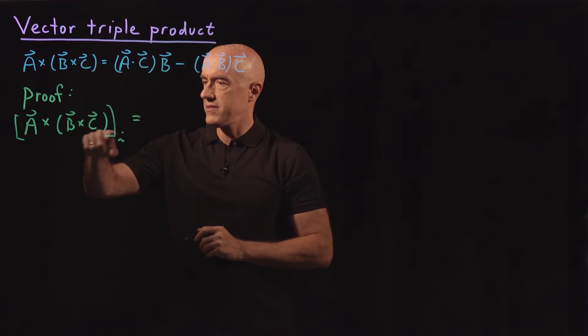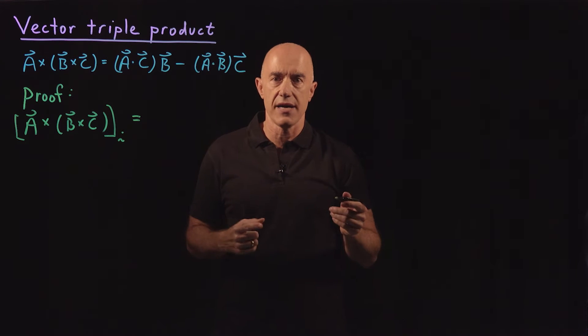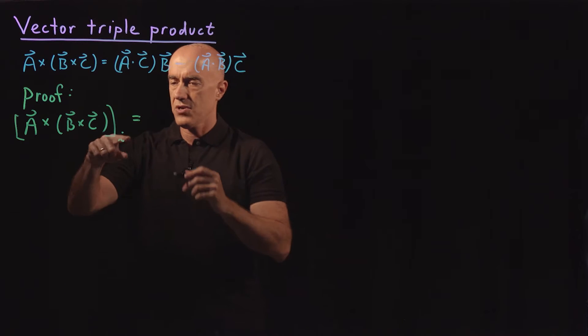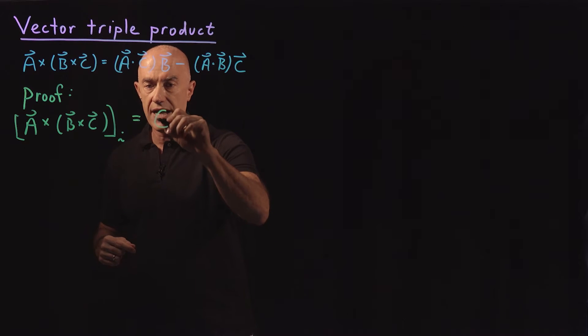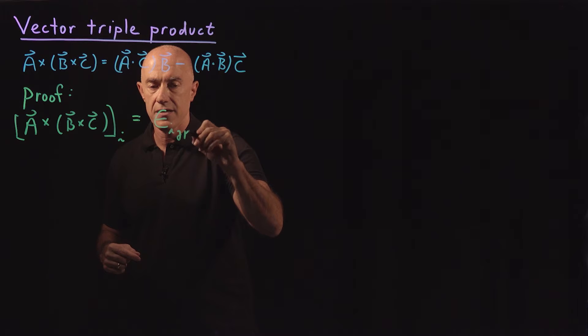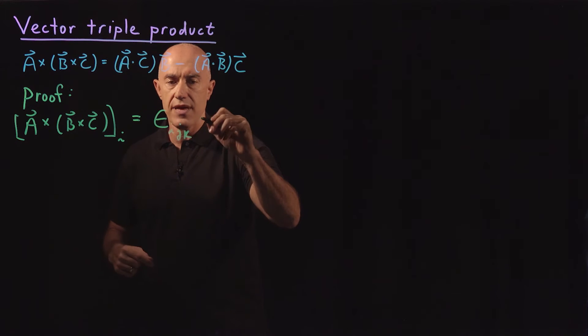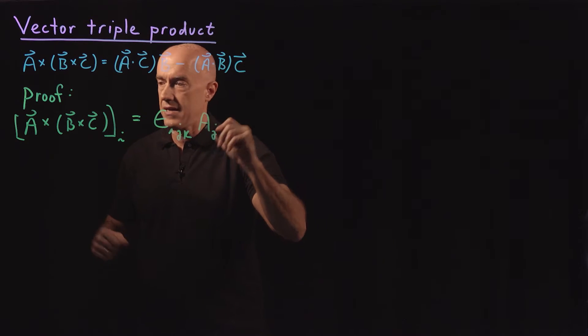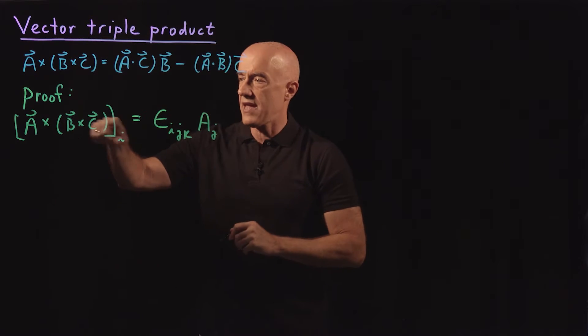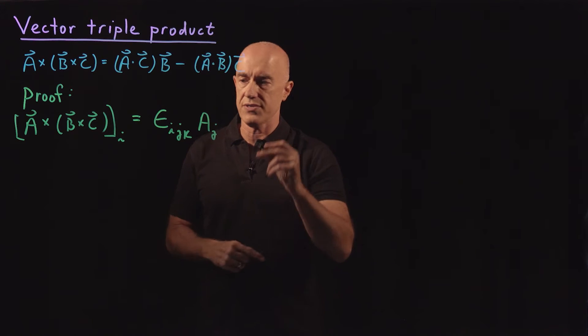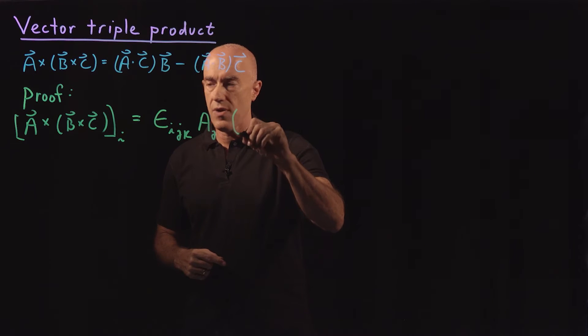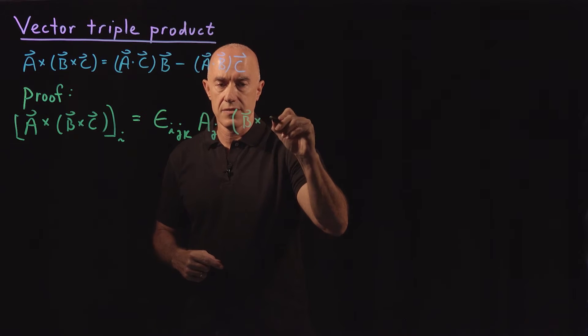We can write this using the Levi-Civita symbol. So it's the i-th component. We can use epsilon_{i,j,k}. And then we have an A_j. And then we have the k-th component of B cross C.